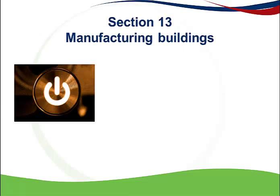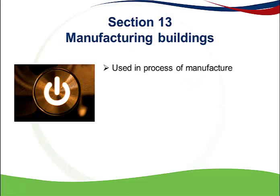Section 13 provides an allowance on buildings used by the taxpayer in a process of manufacture. An example of such a building would be a factory. This allowance can be claimed on new and unused buildings, which means that the taxpayer erected the building himself or purchased it directly from the developer.